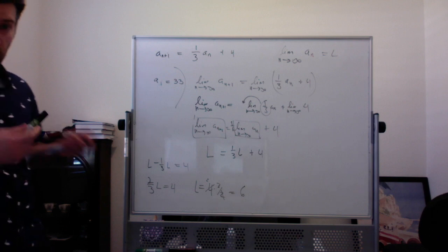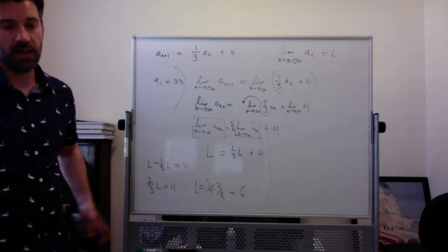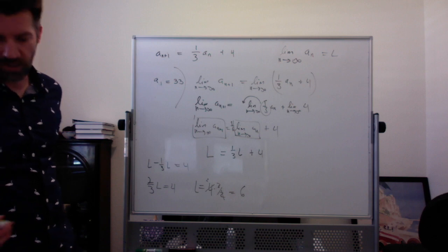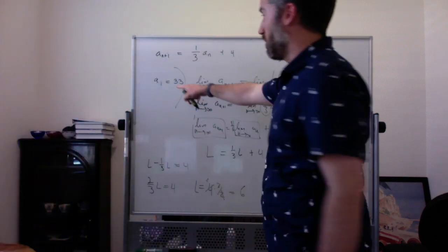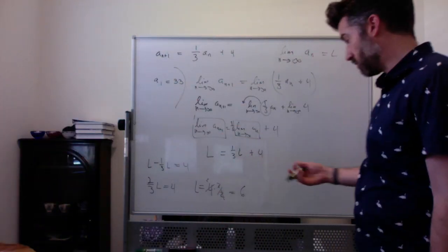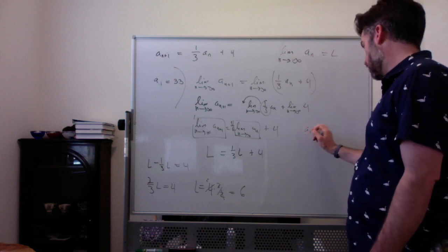Now really what I would say here is the equilibrium is 6, but for the most part right now it's the same thing. You can see that if we start at 33, our values will get closer and closer to 6. A1 is 33.